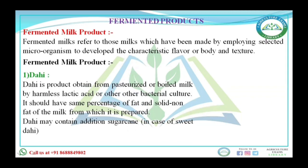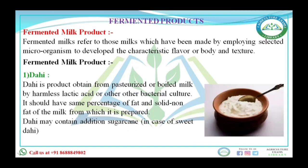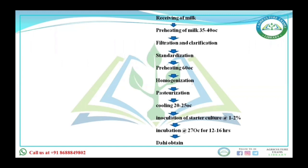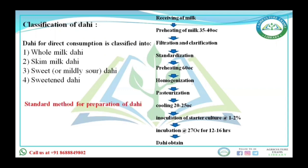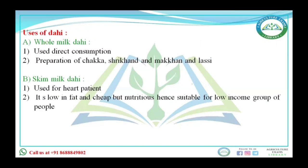The manufacturing process for dahi involves: receiving milk, pre-heating, filtration and clarification, standardization, homogenization, pasteurization, cooling, then inoculation of starter culture at the rate of 1 to 2 percent. The mixture is left for 6 to 12 hours, after which dahi is obtained.